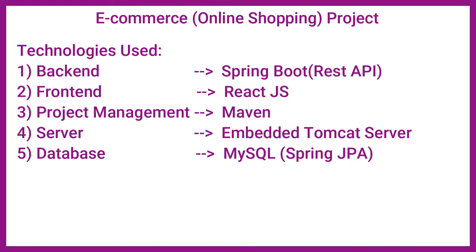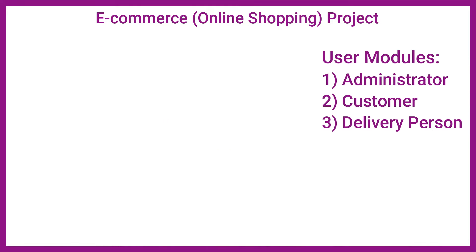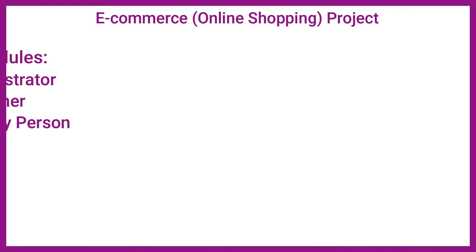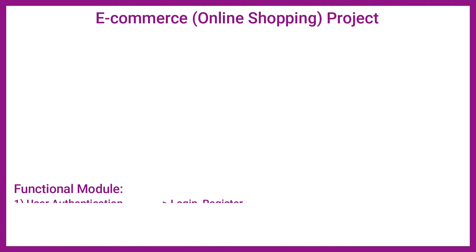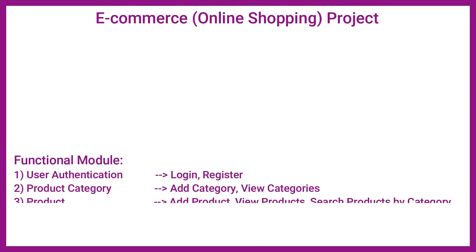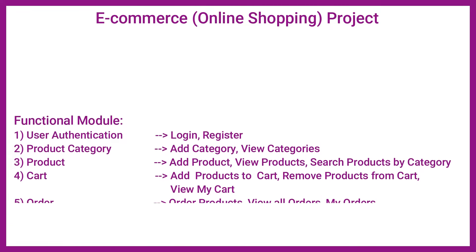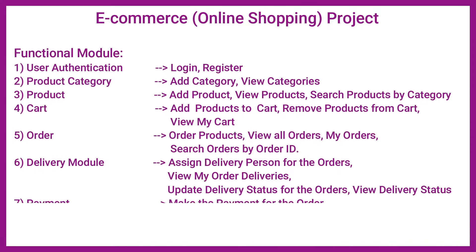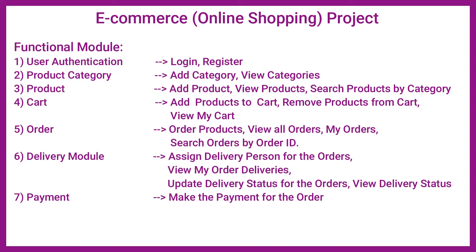For the database I have used MySQL, and for database connectivity and operations I have used Spring JPA. The user modules present in the project are: the administrator module, the customer module, and the delivery person module. The functional modules include user authentication, where admin, customer, or delivery person can perform their authorized functionalities only after login. The second module is the product module where we can add, update, delete, search, and view products. The third is the category module where we can add, update, view all categories.